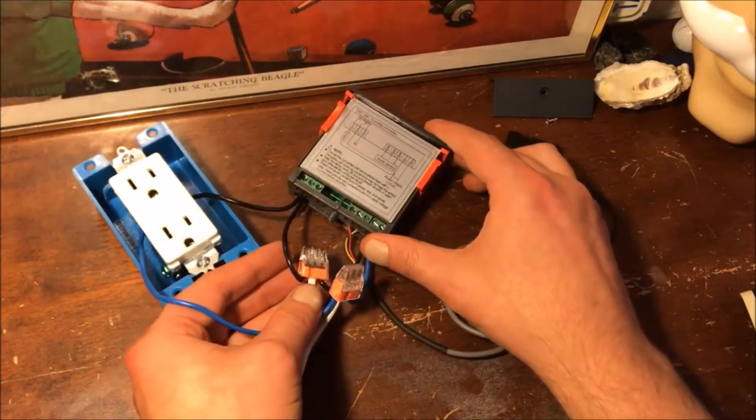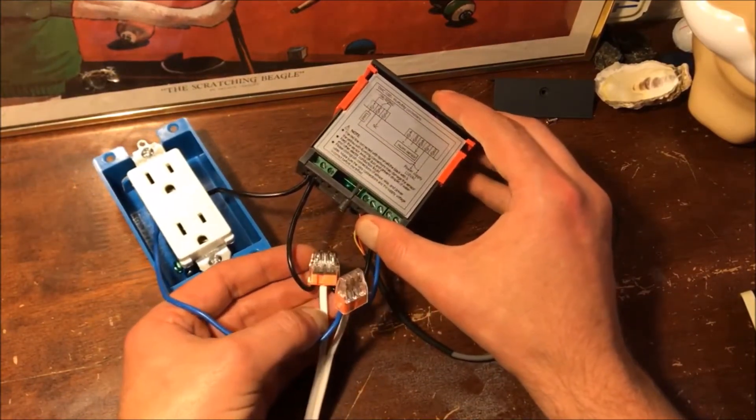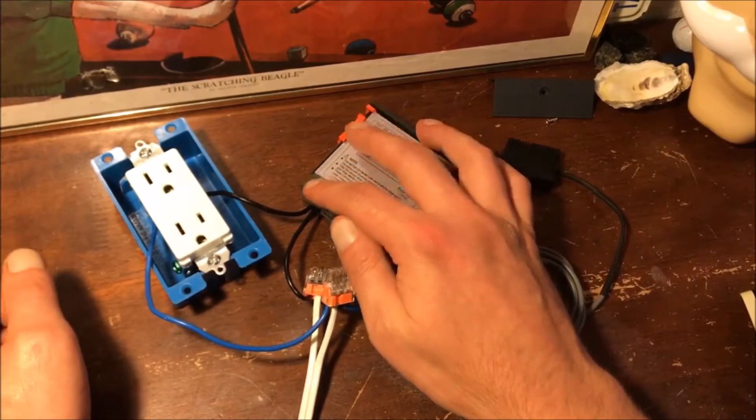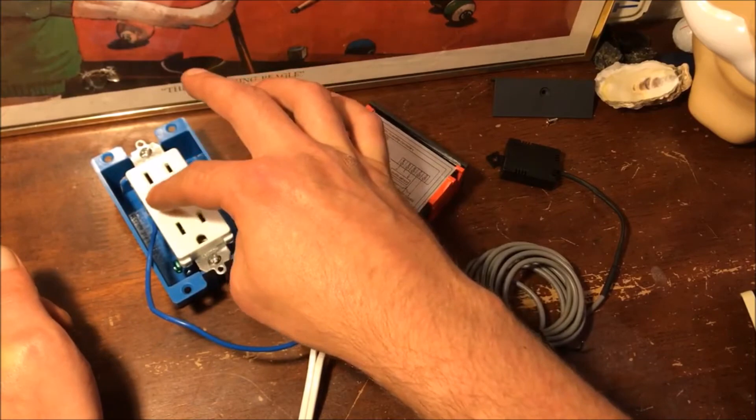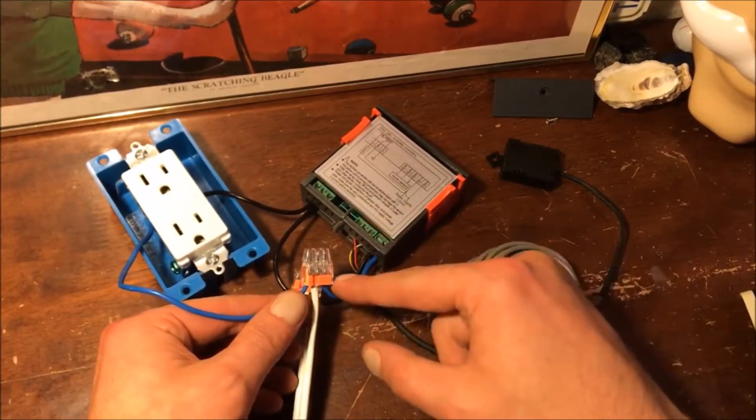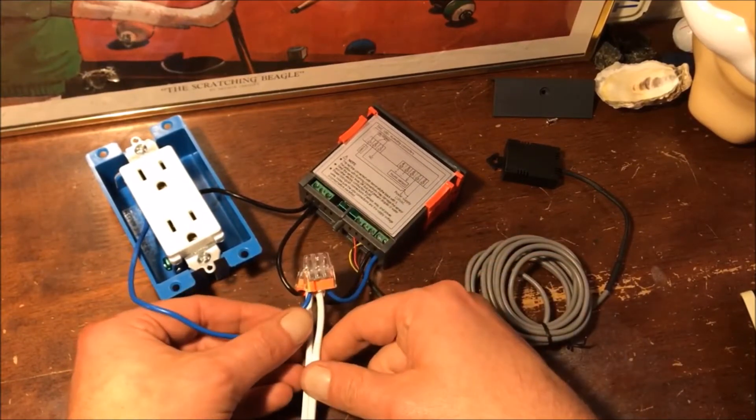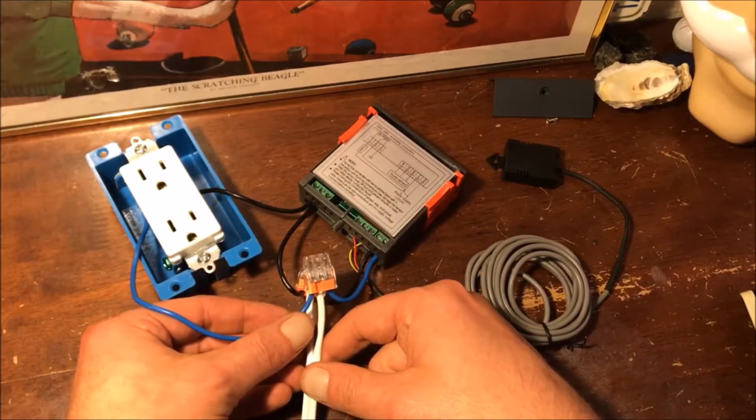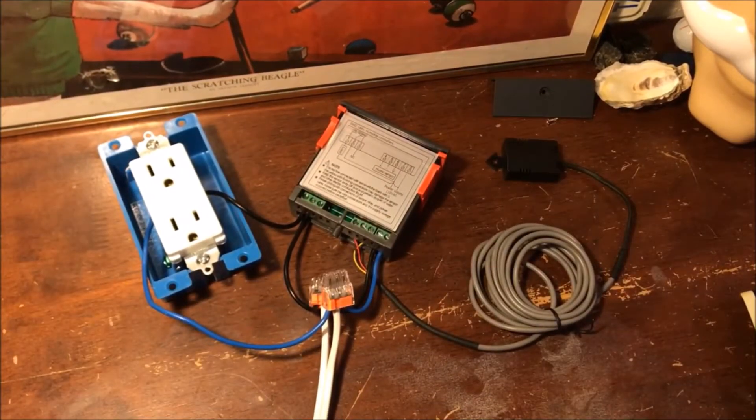From one we have the hot line going into our socket—we're using this top one—and then the neutral line going back to a splitter to number one and then back to the mains. So let me just plug this in to see if it works.